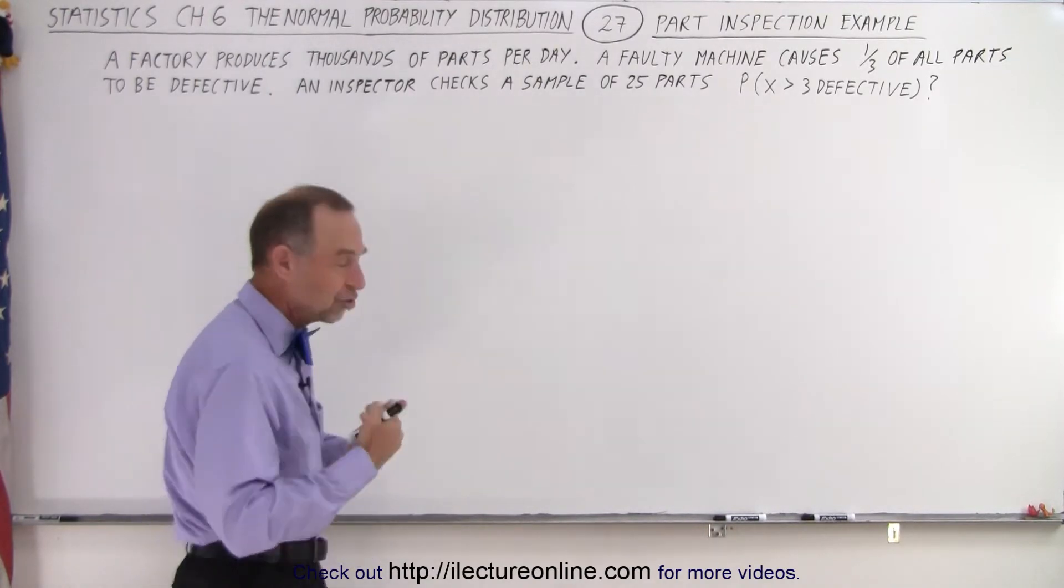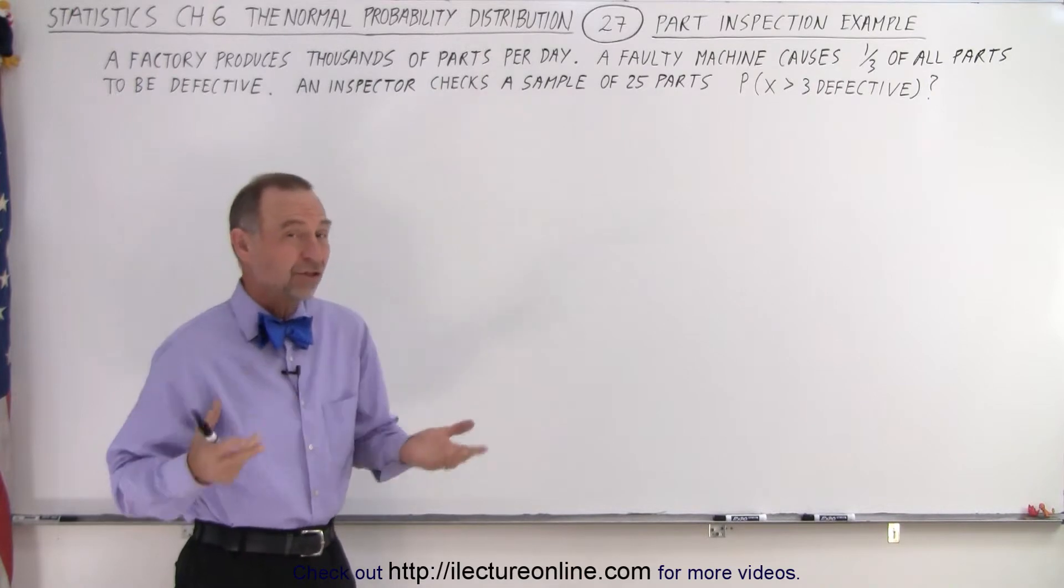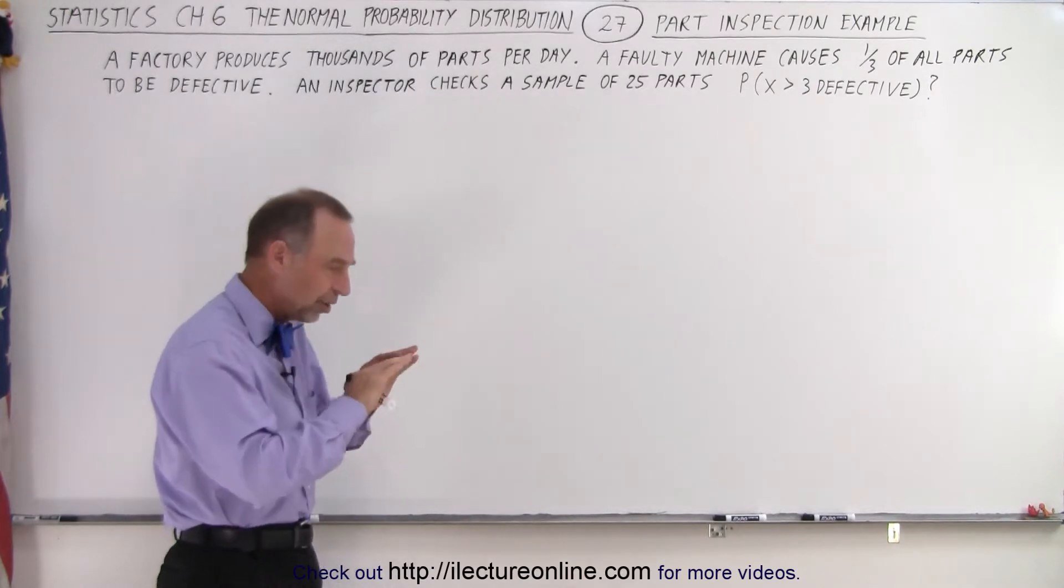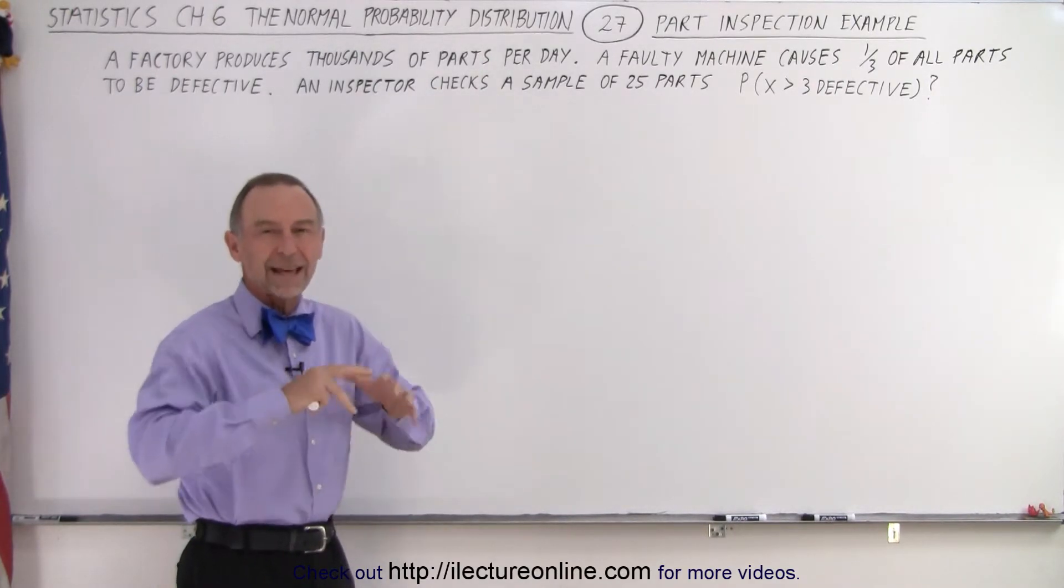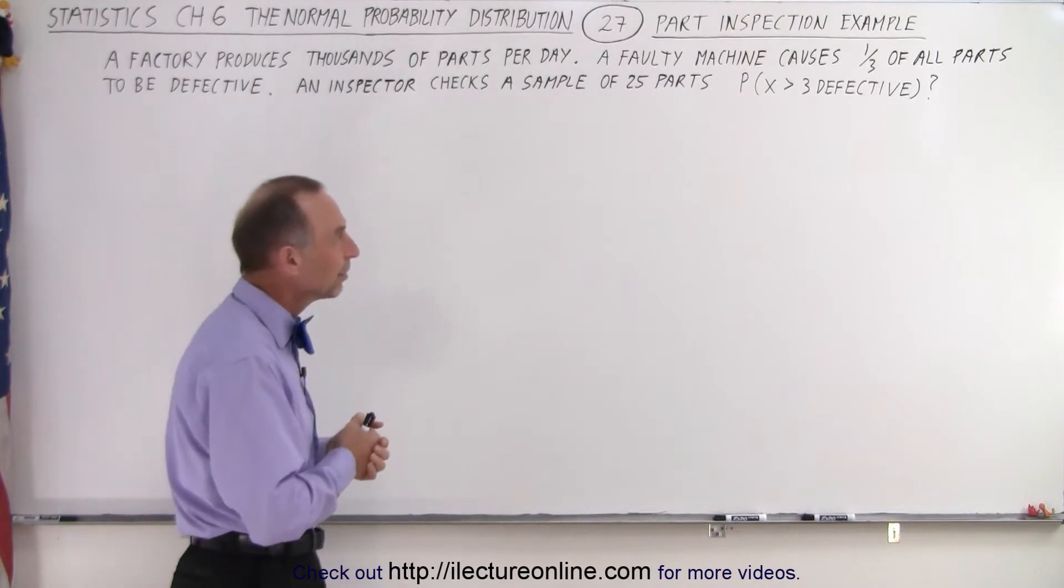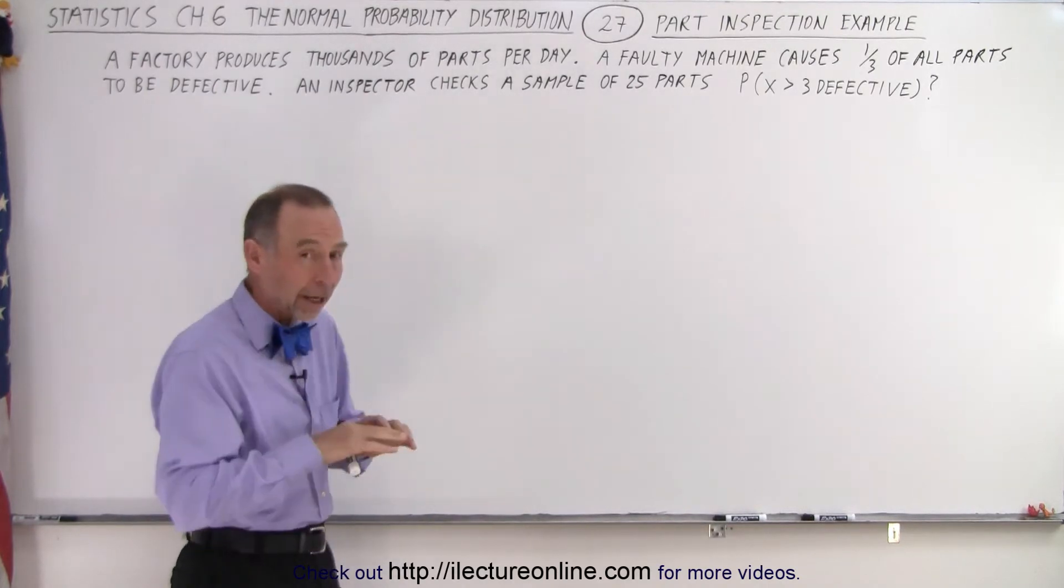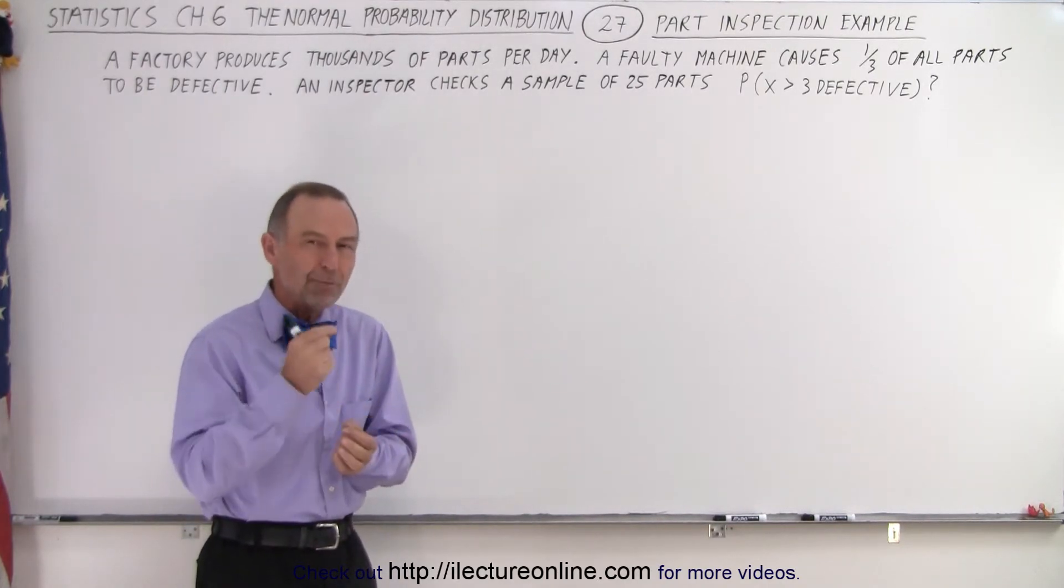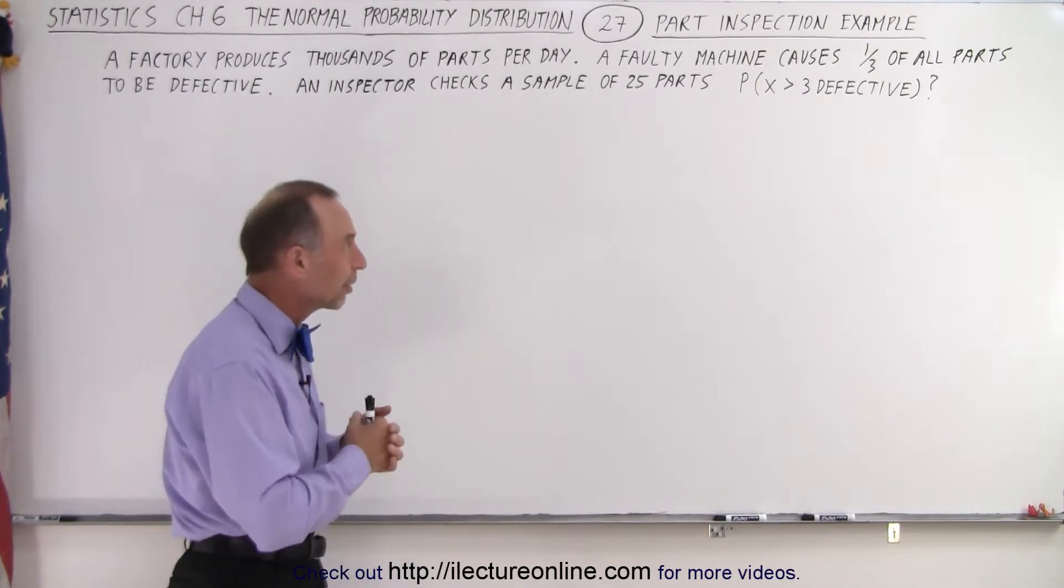So an inspector wants to check, and obviously you're not going to check every single part, you just want to check a sample, and let's say the sample chosen is 25. Now what is the probability that out of those 25, there will be more than three defective parts found?